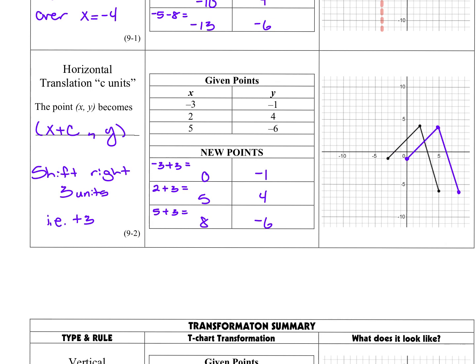Now we've got our shift. If we want to shift something, we're going to take all of our points and just slide them in whatever direction it says. If I wanted to shift right 3 units, I take all of my x values and just add whatever I'm moving — that's what this x plus c represents — and the y values stay the same. I took my x and added 3 for each point, giving me 0, negative 1; up to 5, 4; over to 8, negative 6.